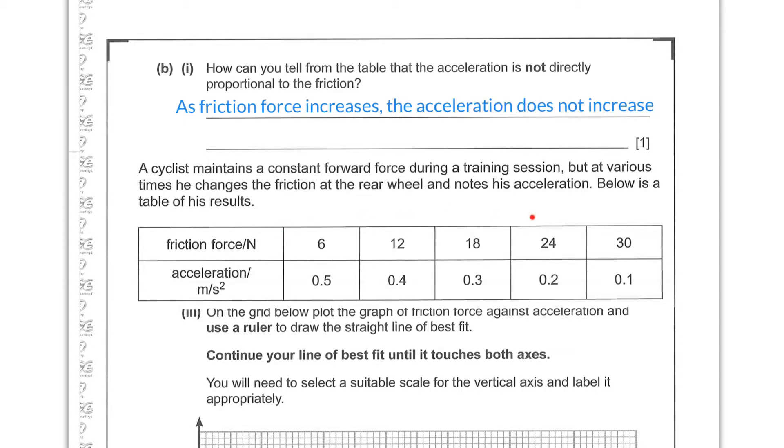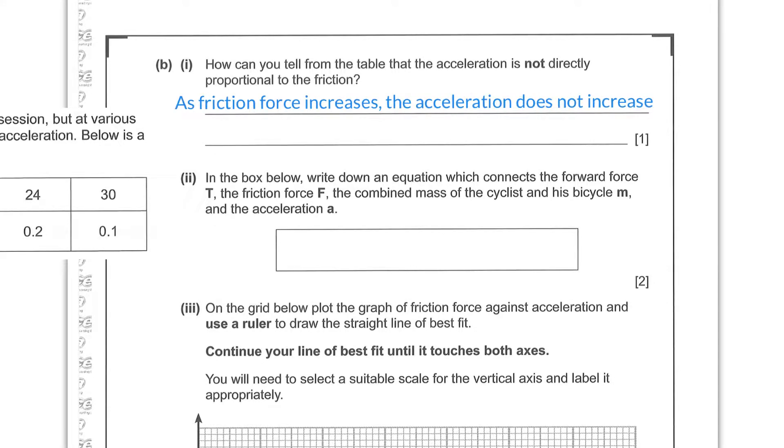But the easiest way to say it here is that this one is going up, this one isn't. So it's definitely not proportional if they don't at least even follow any common trend. Part 2. In the box below write down an equation which connects the forward force T, the friction force F, the combined mass of the cyclist and his bicycle M, and the acceleration A.